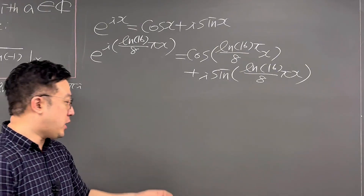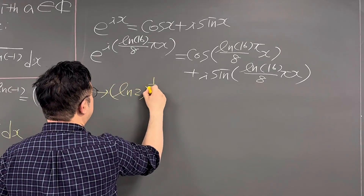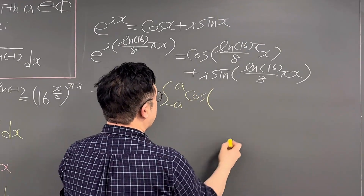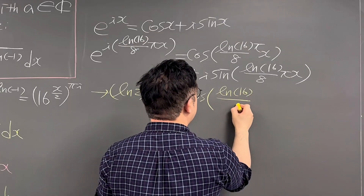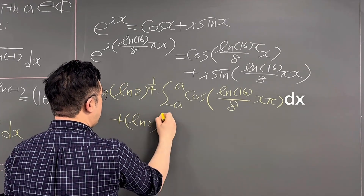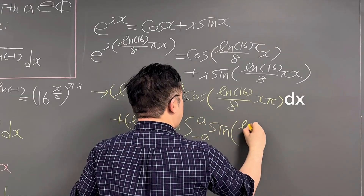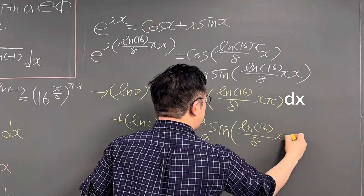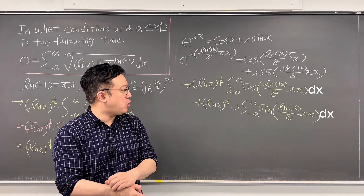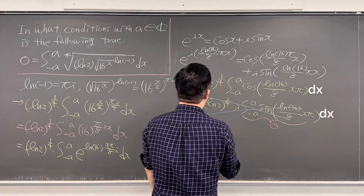Based on this expression, we can rewrite the integral as LN(2)^(1/4) times the integral from negative A to A of cosine(LN(16)/8 · πx) dx, plus LN(2)^(1/4) times i times the integral from negative A to A of sine(LN(16)/8 · πx) dx. Notice that the second integral — the sine integral over the symmetric interval — is just zero, so that whole term cancels.